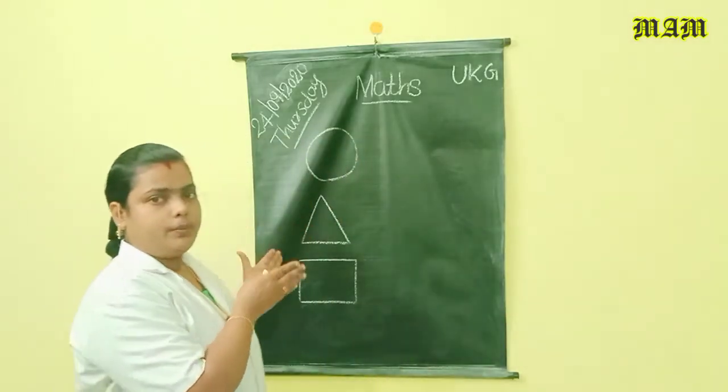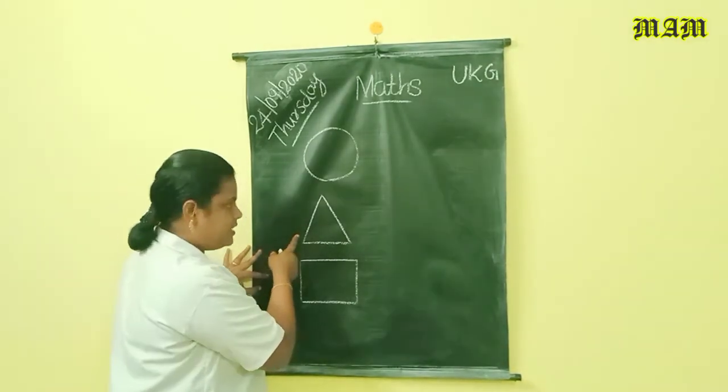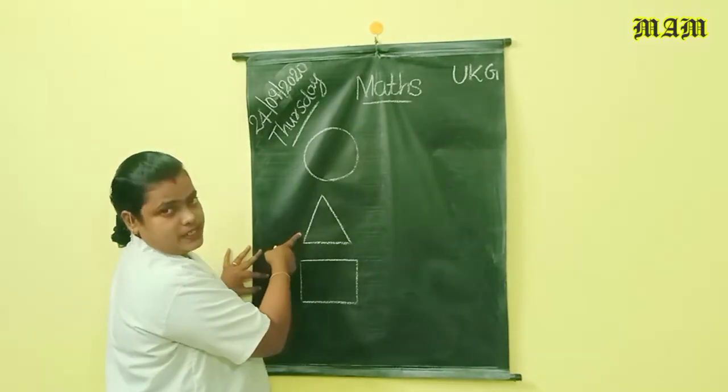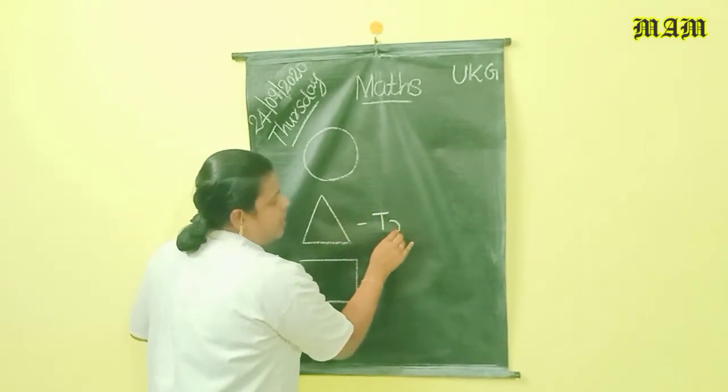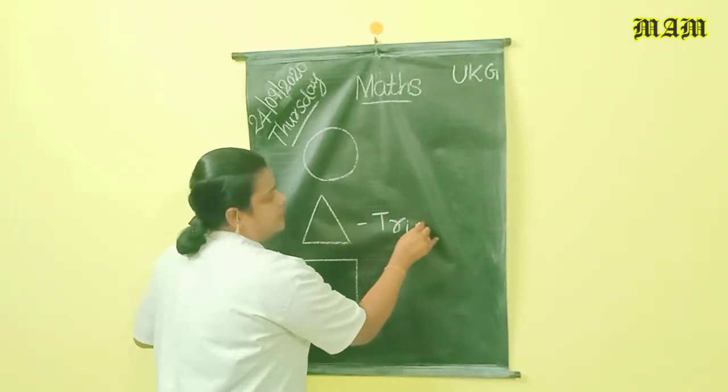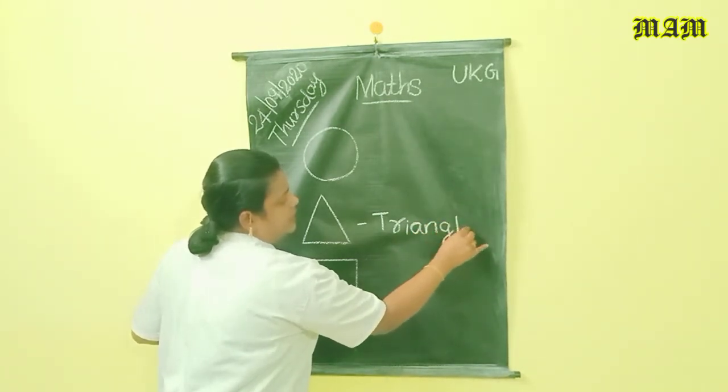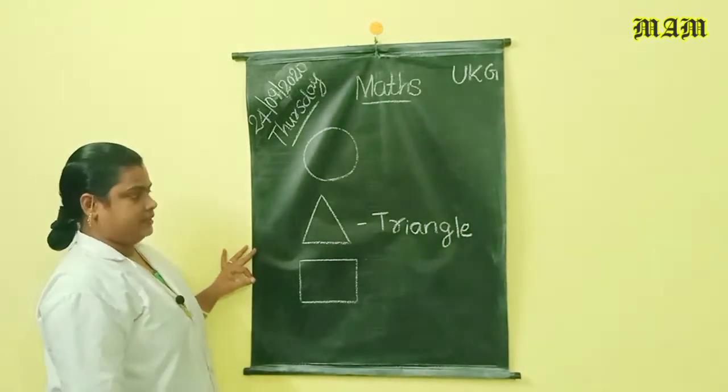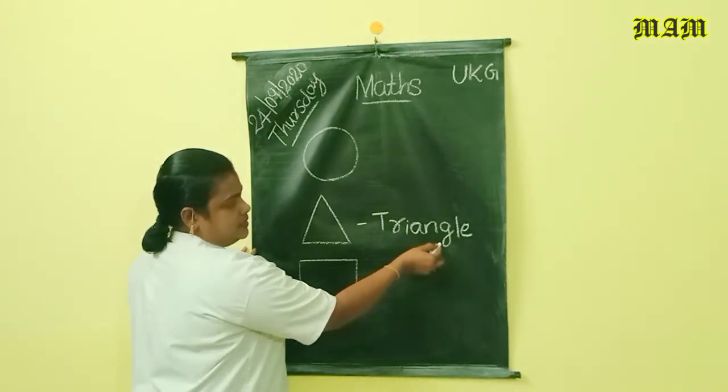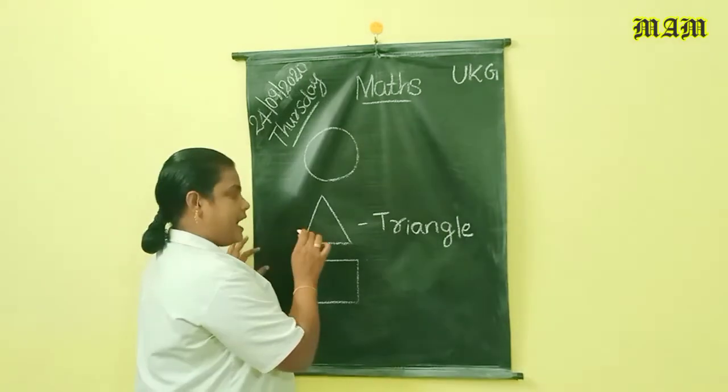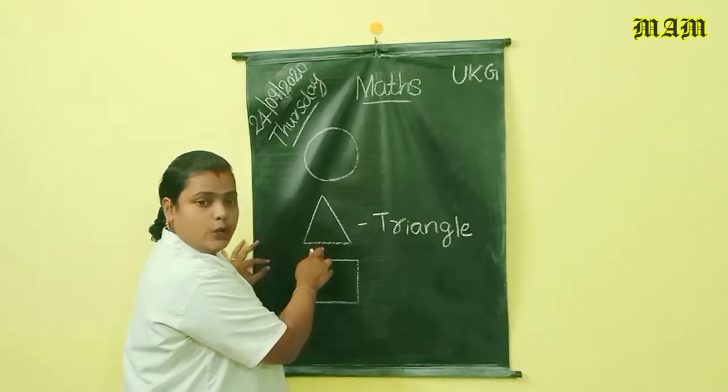Then look at the board. Which shape is this? This is triangle. The spelling of triangle: T-R-I-A-N-G-L-E. Triangle. Triangle means trigonum.